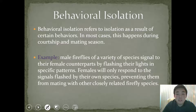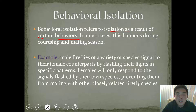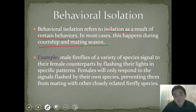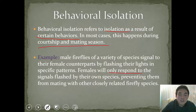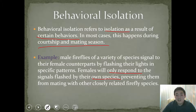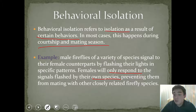The next one is behavioral isolation. This refers to an isolation that results from certain behaviors that individuals of a species display. In most cases, this happens during courtship or mating season. The example is about fireflies and how females only respond to signals flashed by their own species. So if you were a male of a different species and did not have the perfect flashing sequence of lights, you're not going to be able to reproduce with the females of a different species because females are so selective.